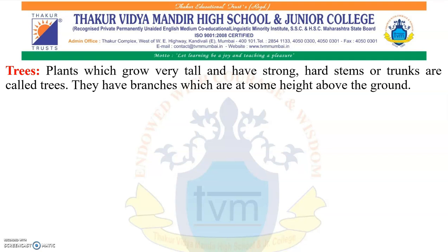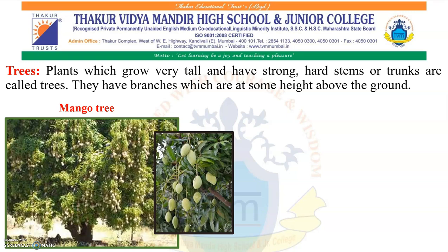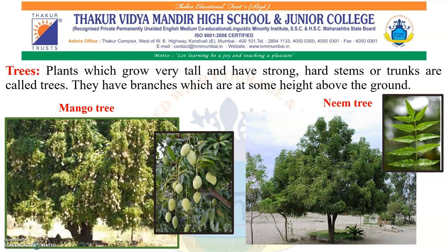Trees: we can easily notice the difference in shape and height of plants in our surroundings. Plants which grow very tall and have a strong, hard stem or trunk are called trees. They have branches at some height above the ground and bear flowers and fruits for many years. Examples include mango tree and neem tree.